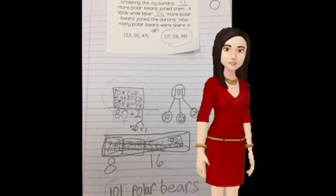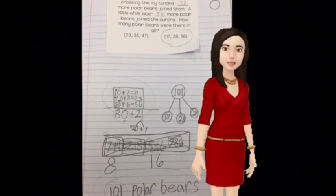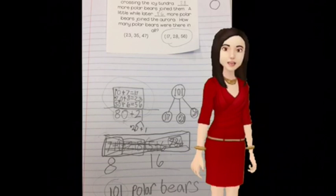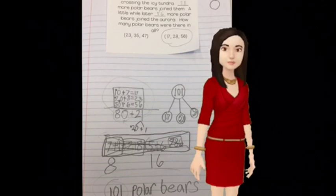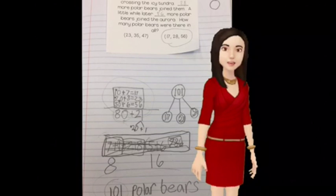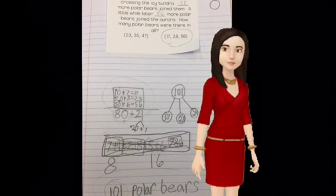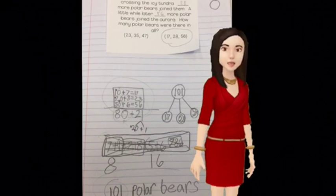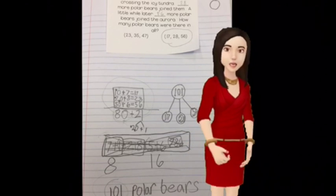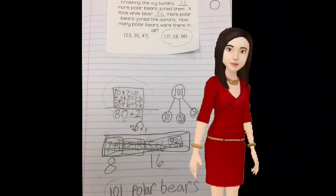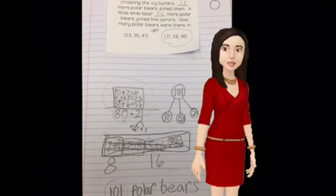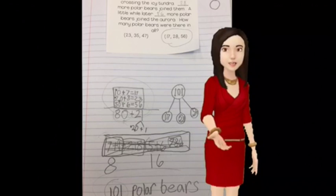Then I did the 1s: 7, 8, 6, plus 20 equals 21. Then 80, and I put a 20 with the 80, and it equals 100. Then I added one more and then made 101.